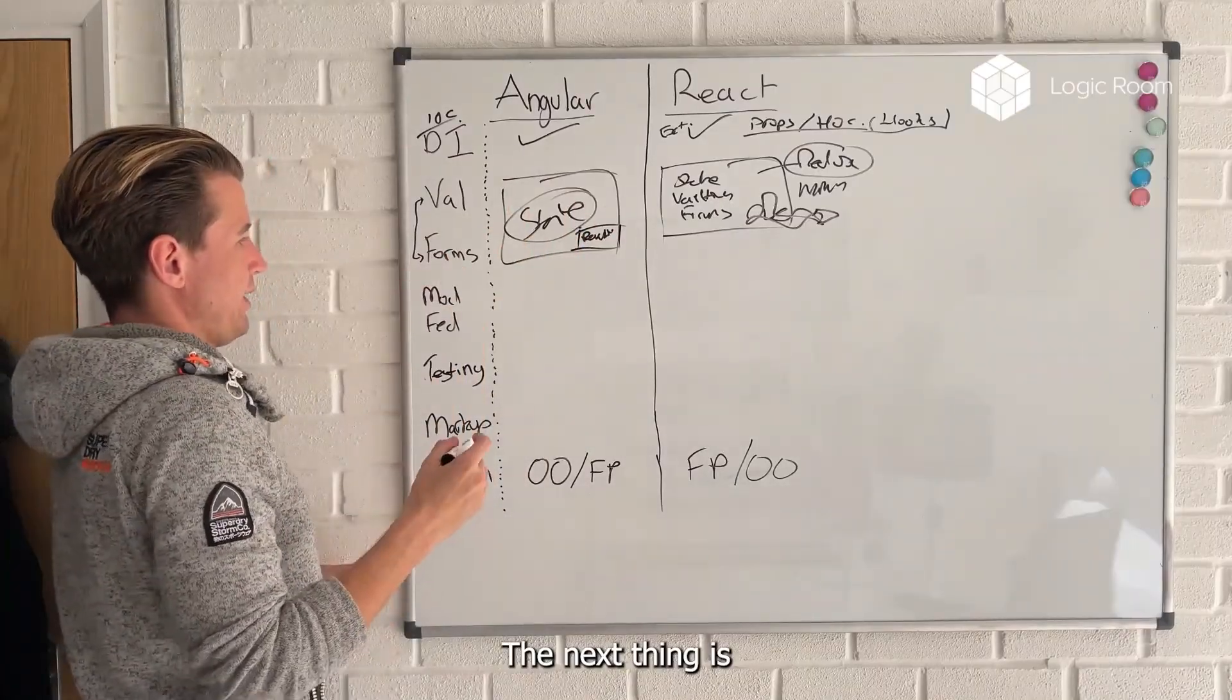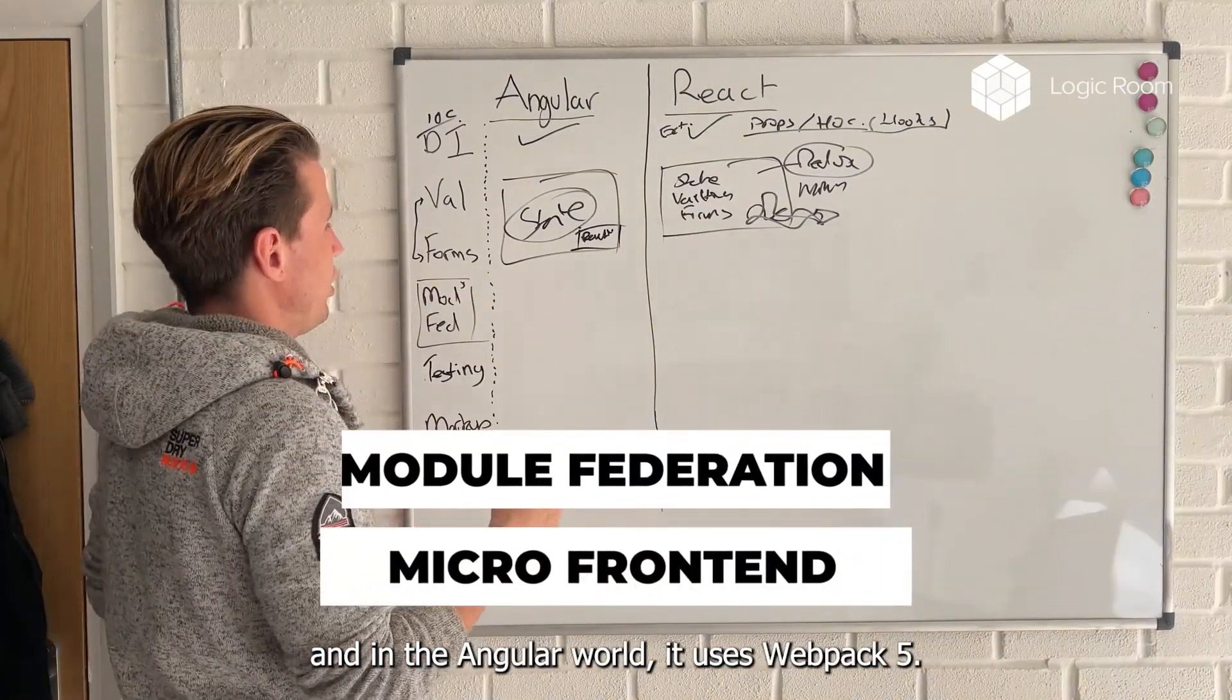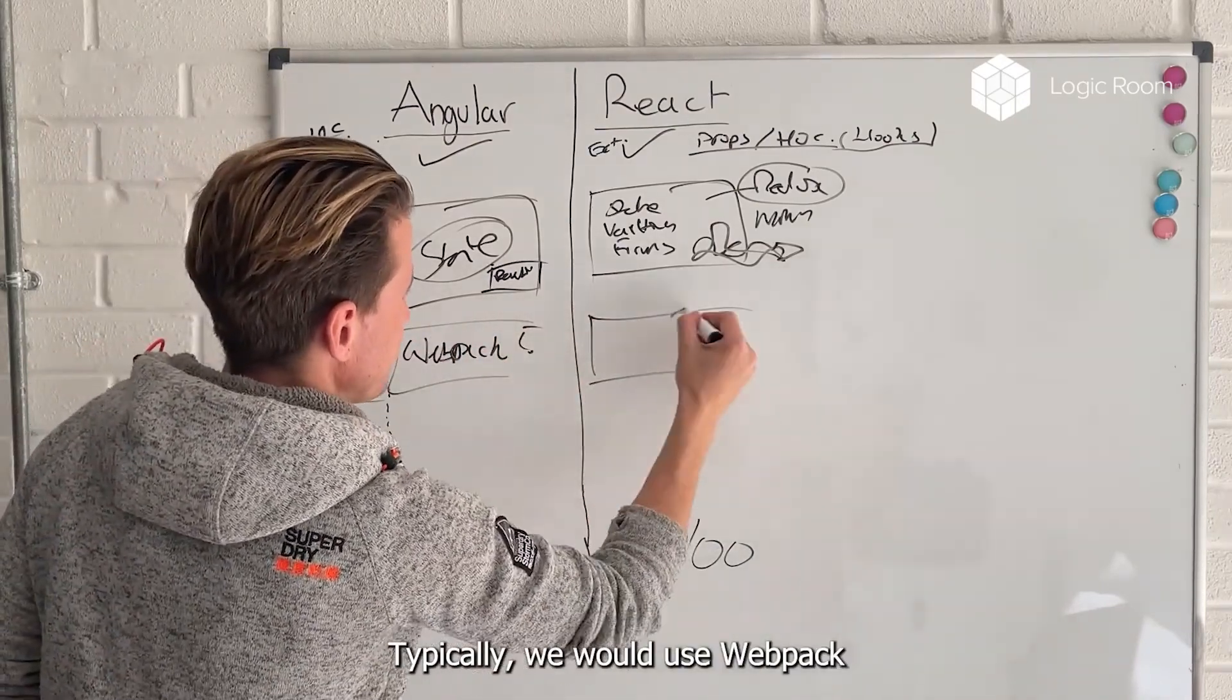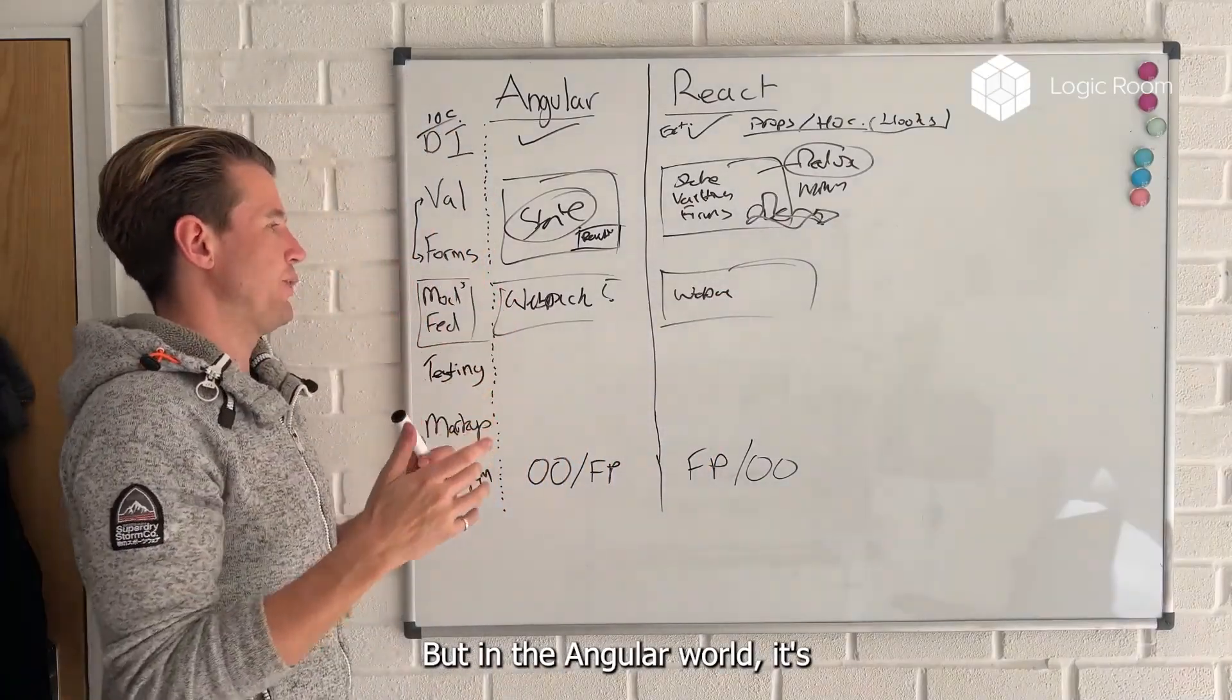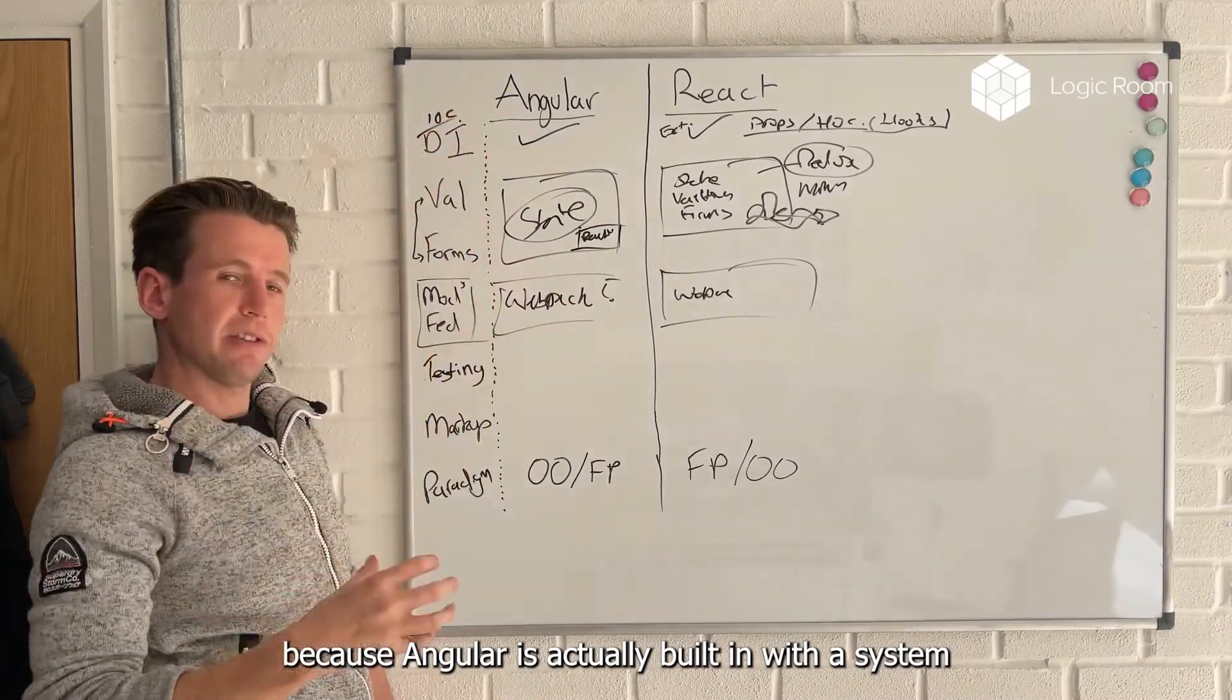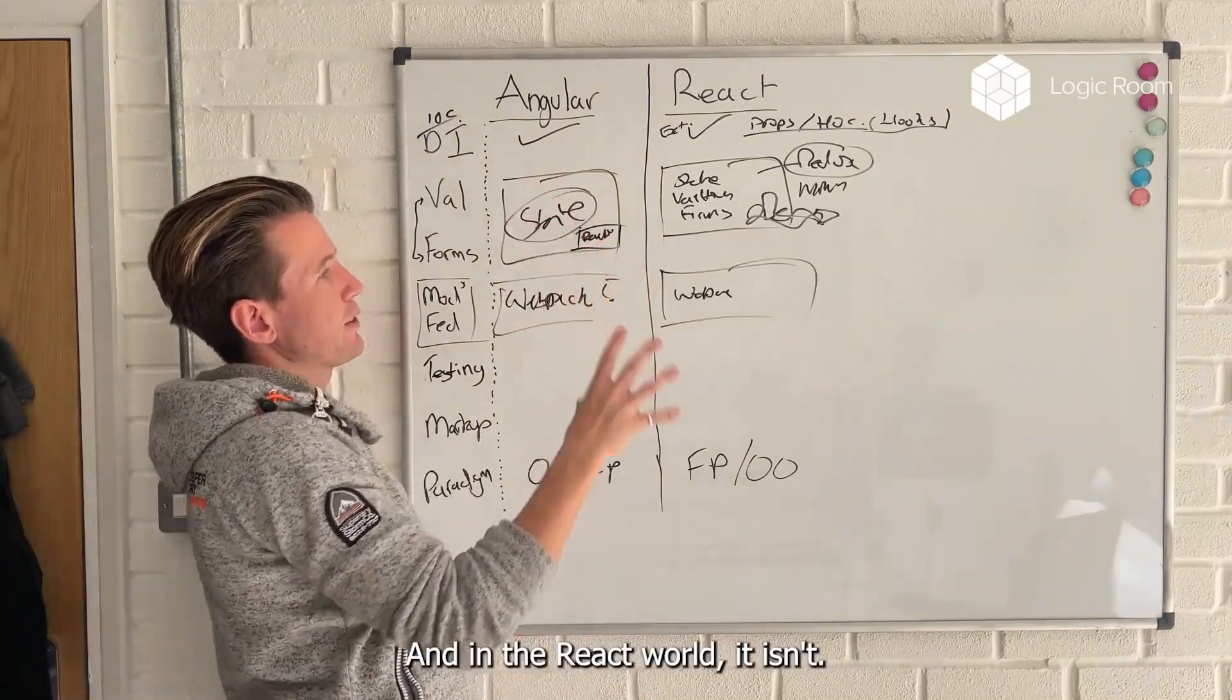The next thing is module federation and micro frontends. In the Angular world, it uses Webpack 5, or rather on both of them, typically we would use Webpack 5 to enable this to happen. But in the Angular world, it's probably going to be much easier out of the box because Angular is actually built in with a system for handling different modules and for doing dynamic and lazy loading. And in the React world, it isn't. In the React world, we are just dealing with a very simple markup system. React is really just a view layer for an application.